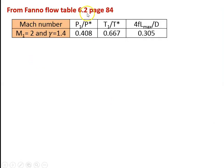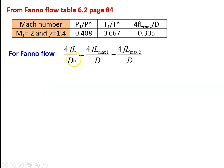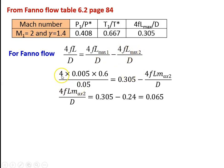From the fanno flow table, table number 6.2, page number 84, for Mach number M1 equal to 2 and gamma equal to 1.4: P1 by P star equal to 0.408, T1 by T star equal to 0.667, 4FL max by D equal to 0.305. Using 4FL by D equal to (4FL max 1 by D) minus (4FL max 2 by D), substituting: 4 into 0.005 into 0.6 divided by 0.05, equal to 0.305 minus 4FL max 2 by D. Therefore, 4FL max 2 by D equal to 0.305 minus 0.24, equal to 0.065.